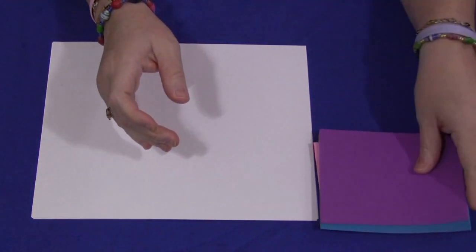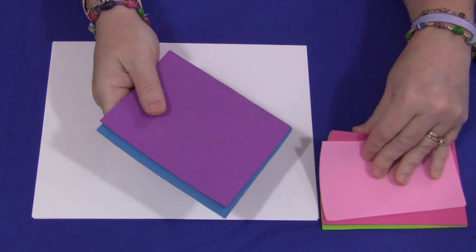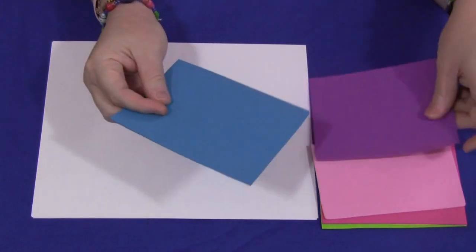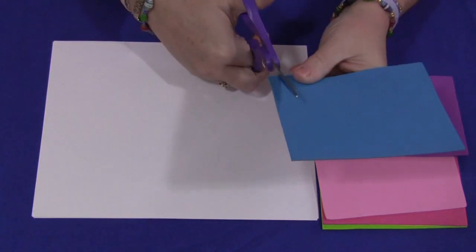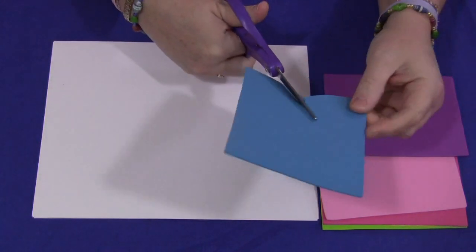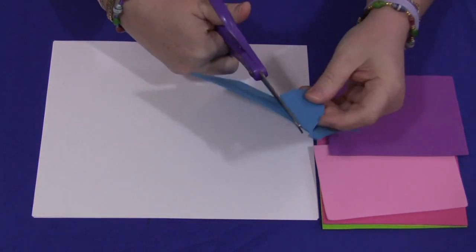And what they would do is they would just choose whatever colors they want and they would cut out whatever shapes that they want. And then once they've cut those shapes out, they would then glue them on to the paper.